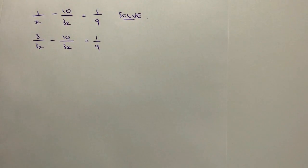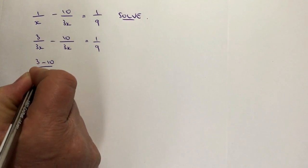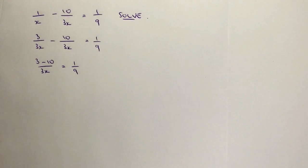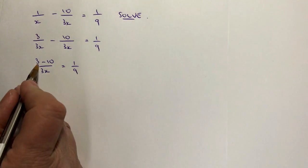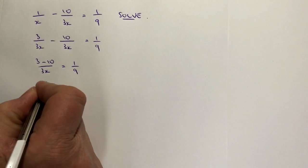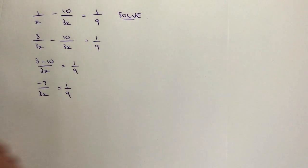Now if I bring these two together, I've then got 3 minus 10 over 3x equals 1 over 9. And then it's a case of just manipulating this until we find the value of x itself. So the first thing I'm going to do is work this out as minus 7 over 3x equals 1 over 9.